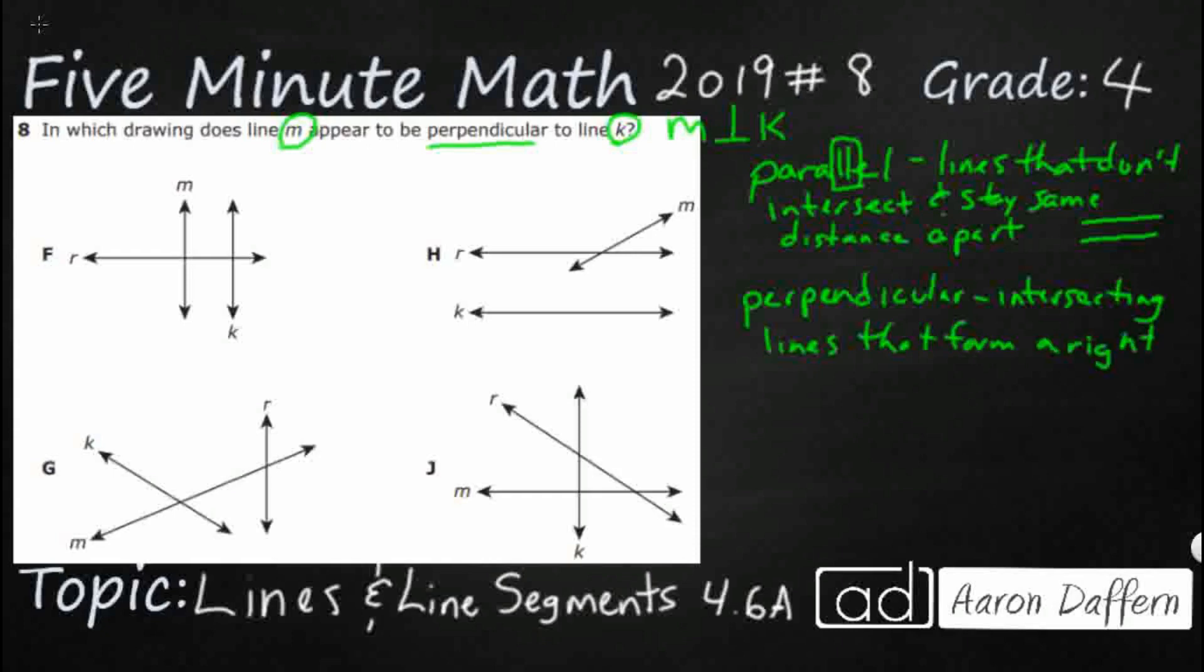Now we might call it a right angle, sometimes you might see it as a 90 degree angle - same thing. Sometimes it's easier just to call it a square corner because that's sometimes the best visual.